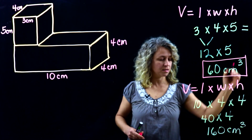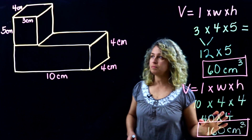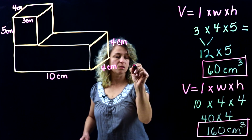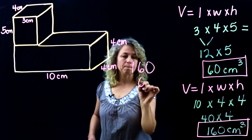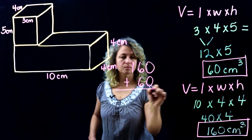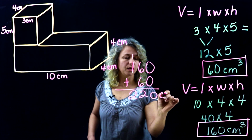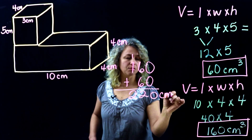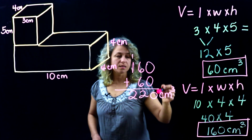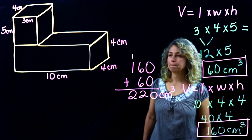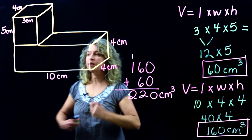Forty times four is 160 centimeters cubed. The first shape has a volume of 60 and the second shape has a volume of 160, so let's add those together: 160 plus 60.